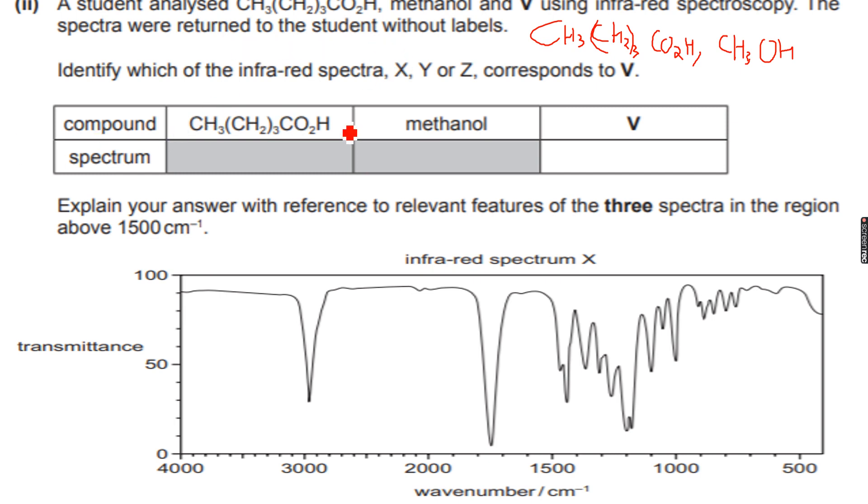So we know that he analyzed them individually using infrared spectroscopy. So he got three different spectra, which they have said are X, Y, and Z. Now we do not know which spectra X is, which spectra Y is, and which spectra Z is, but we know that we will assign these spectra. We have to assign these spectra to, this is one carbon, one and three is four, five carbon. So this is pentanoic acid. So we have to assign these spectra to pentanoic acid, methanol, and this compound V.